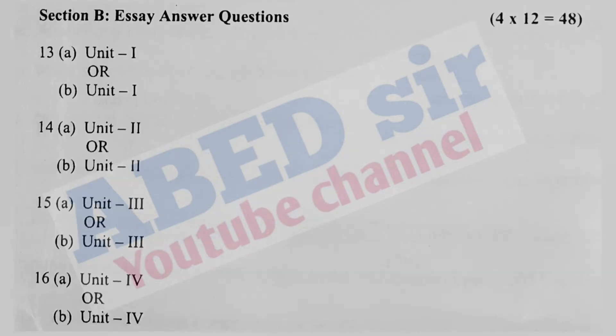Next, in part B, 4 mutual choice questions will be asked. From each unit two questions is there. Out of these two, you have to answer any one, and each one carries 12 marks. So 4 times 12, 48 marks you will get from part B. This 48 marks and part A 32 marks, total 80 marks paper is there for semester exam.